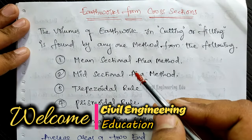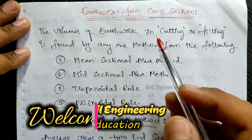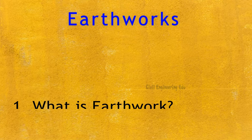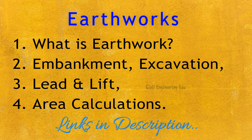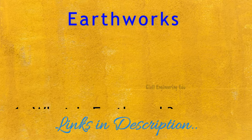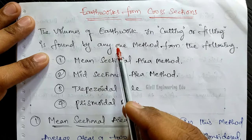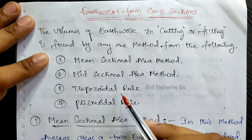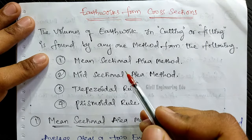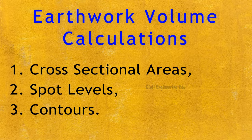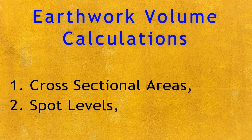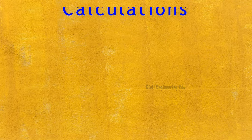Welcome back to our channel Civil Engineering Education. As we are discussing about earthwork calculations, in previous videos we discussed what is earthwork, what is embankment, what is excavation, what is lead, what is lift, and along with that we also covered area calculations for canals — trapezoidal sections. In this video we are going to discuss volume calculations, which can be done by three different methods: by cross-sectional areas, by spot levels, and by contour levels.